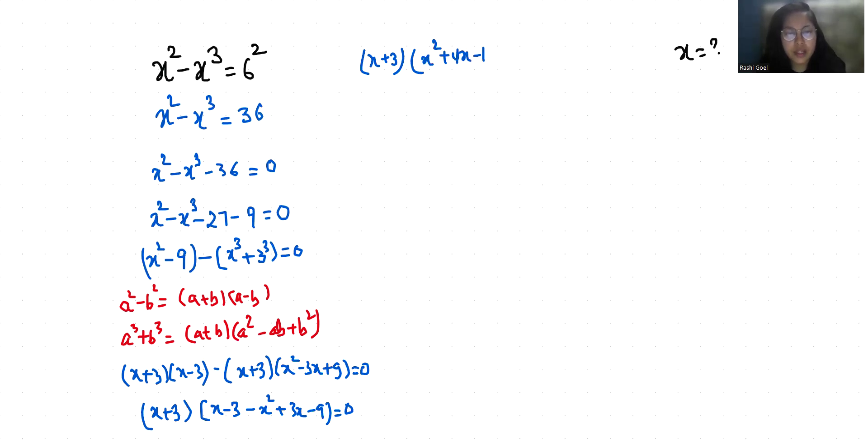So x is negative 3, and here we are going to use quadratic formula, that is minus b plus minus under root b squared minus 4ac by 2a, where a is coefficient of x squared, b is coefficient of x, and c is the constant.